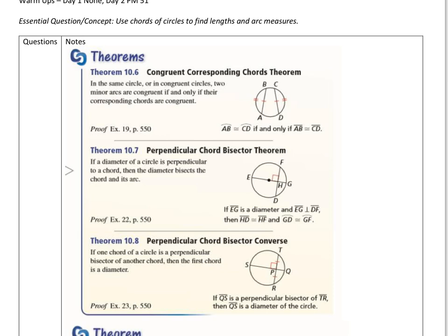The next is the Perpendicular Chord Bisector Theorem. We're going to do some examples of this in a minute. If a diameter of a circle is perpendicular to a chord, then the diameter bisects the chord and the arc.